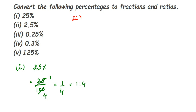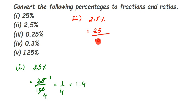Next we have 2.5%. Here we have a decimal. After the decimal there is only one digit, so remove the decimal point and divide by 10 — the number of zeros matches the number of digits after the decimal point. So 2.5 becomes 25 upon 10. Now we also have to remove the percentage sign and divide by 100.